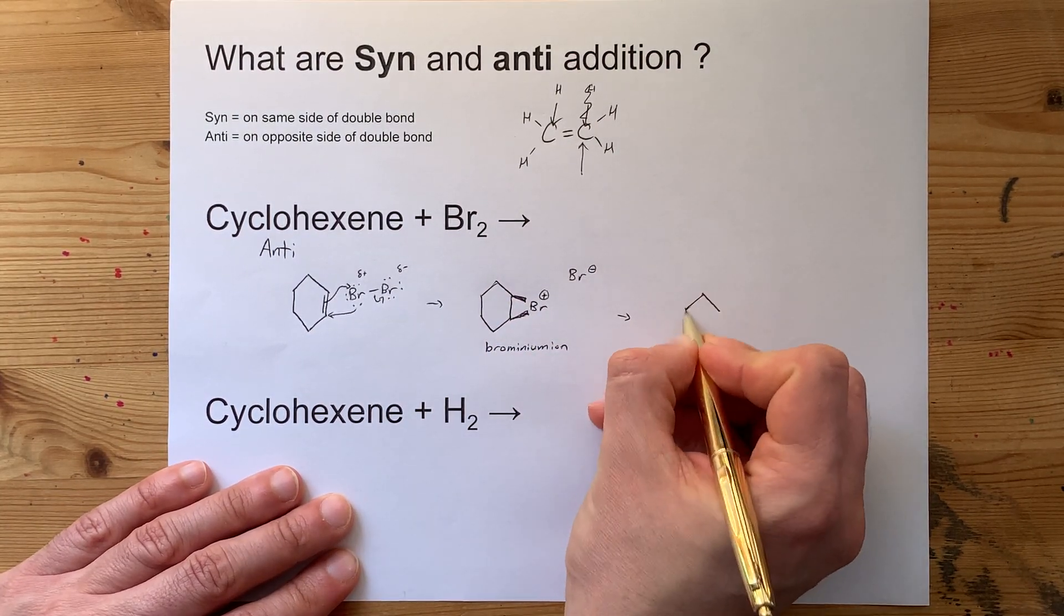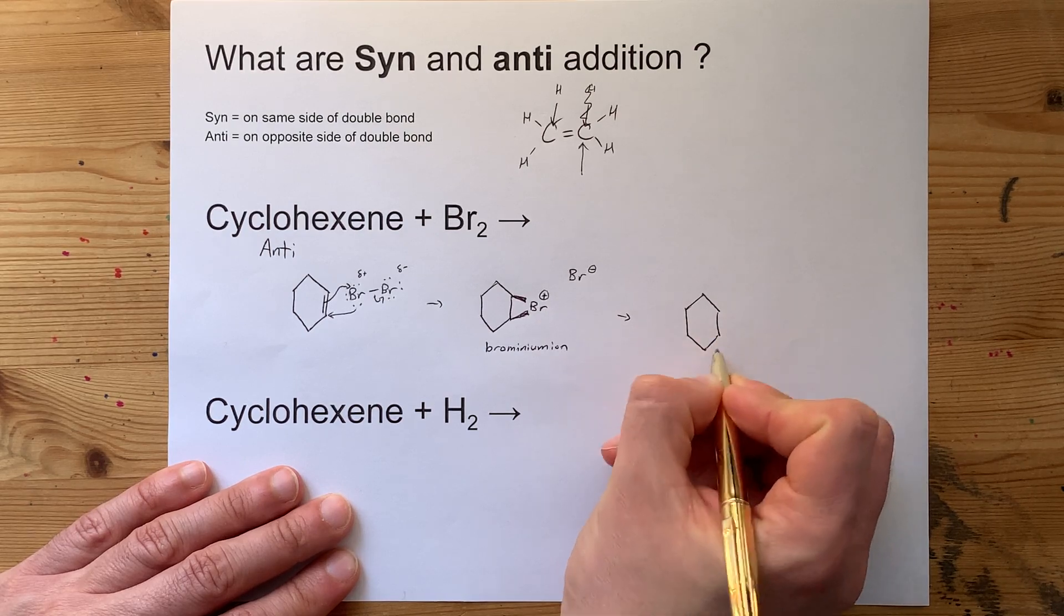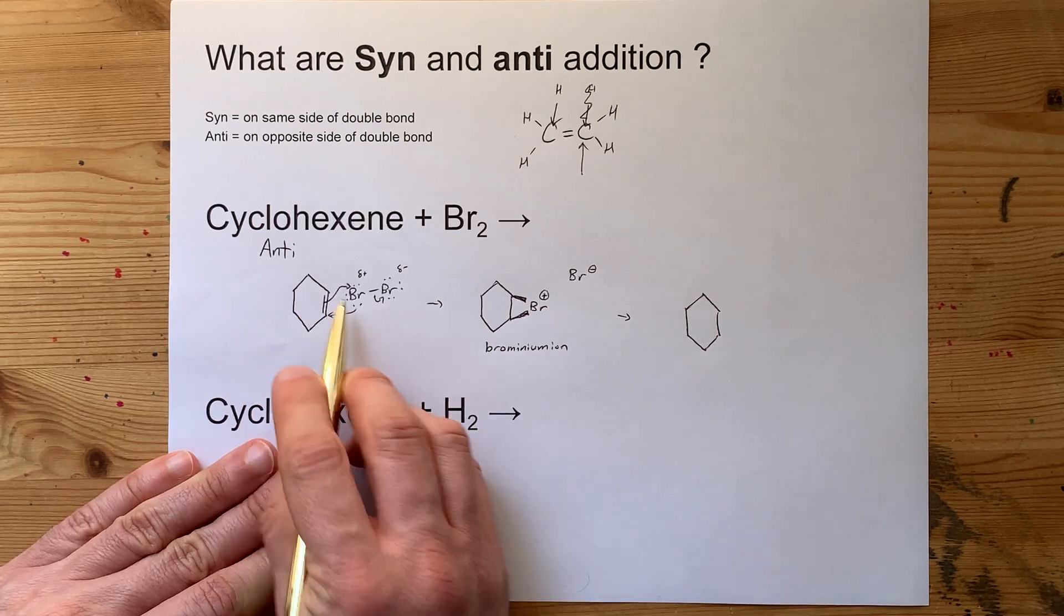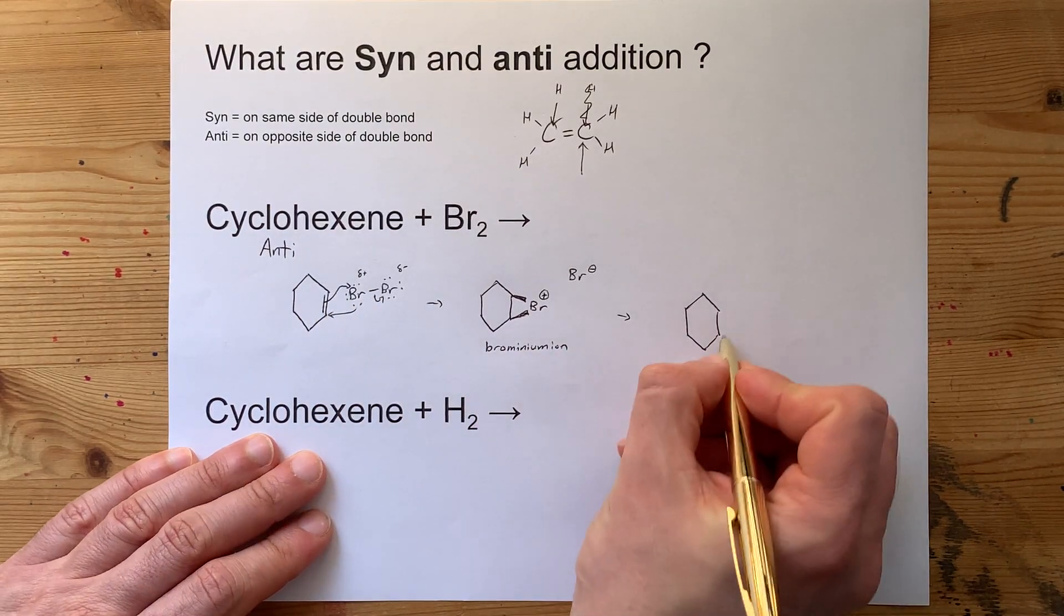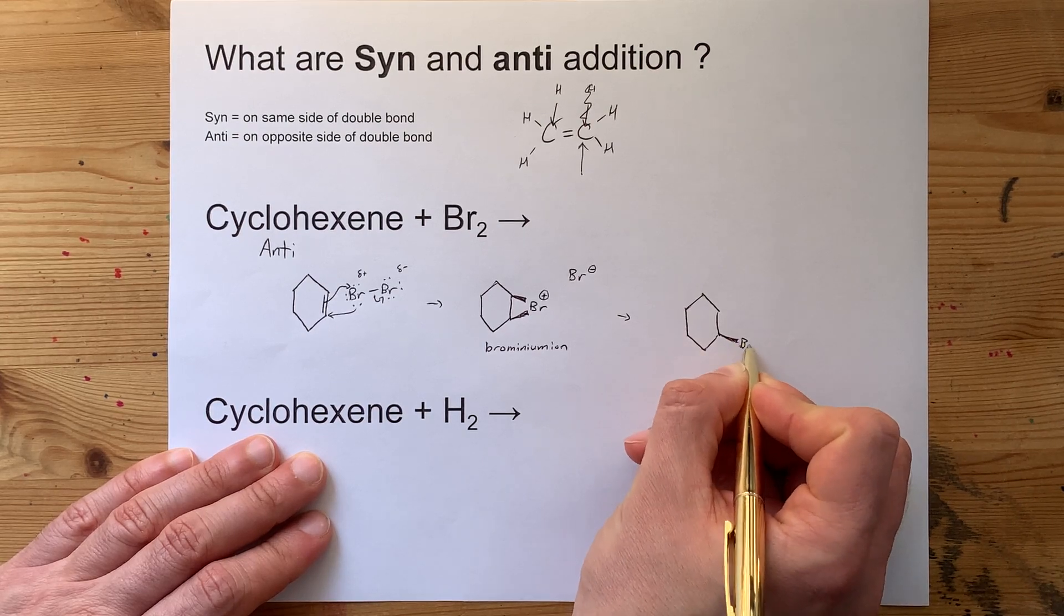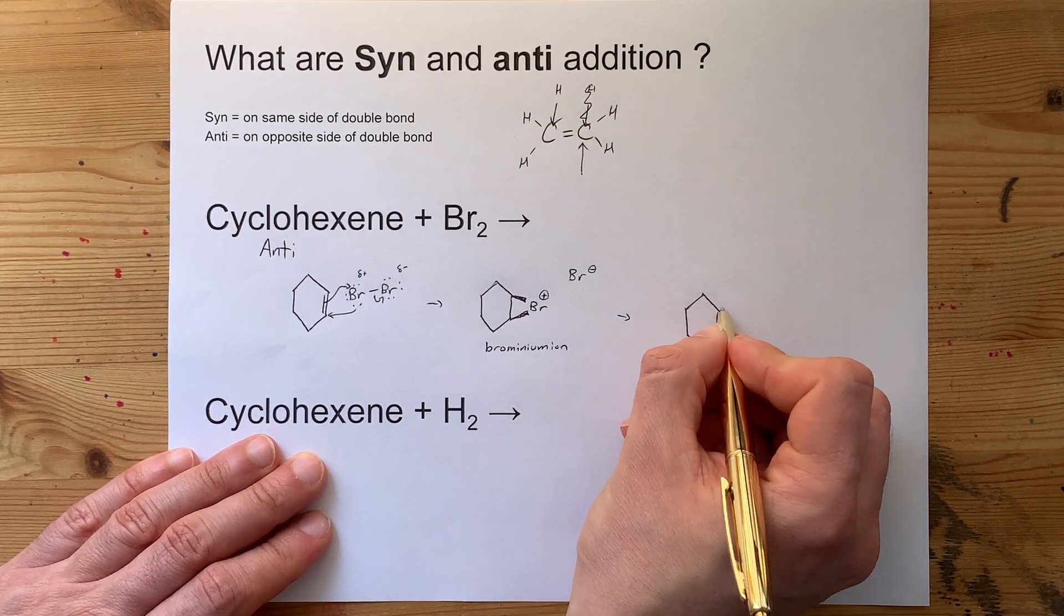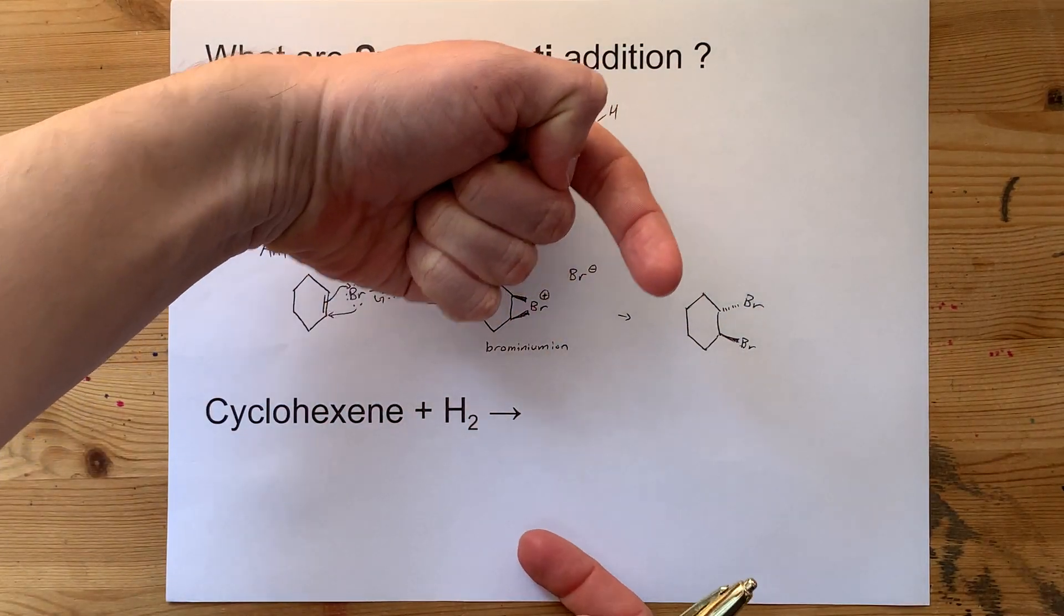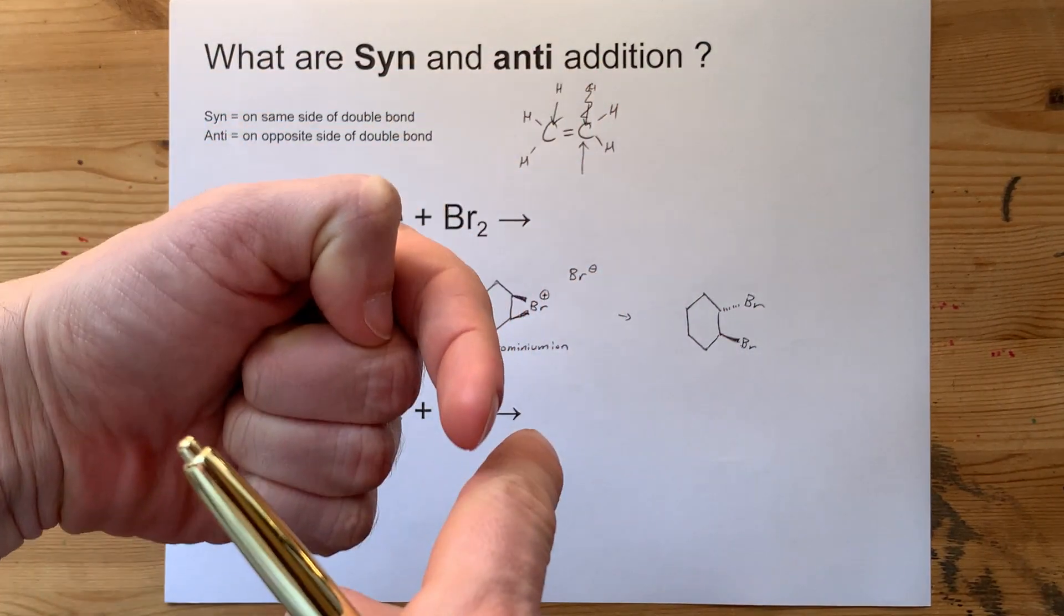The result is that you end up with cyclohexane with two bromines on it. Makes sense. You broke the double bond, but you added a Br to each of them. But if one of them is coming out of the page at you, the other one has to be going into the page in the opposite direction. One got added from behind, one got added from the top.